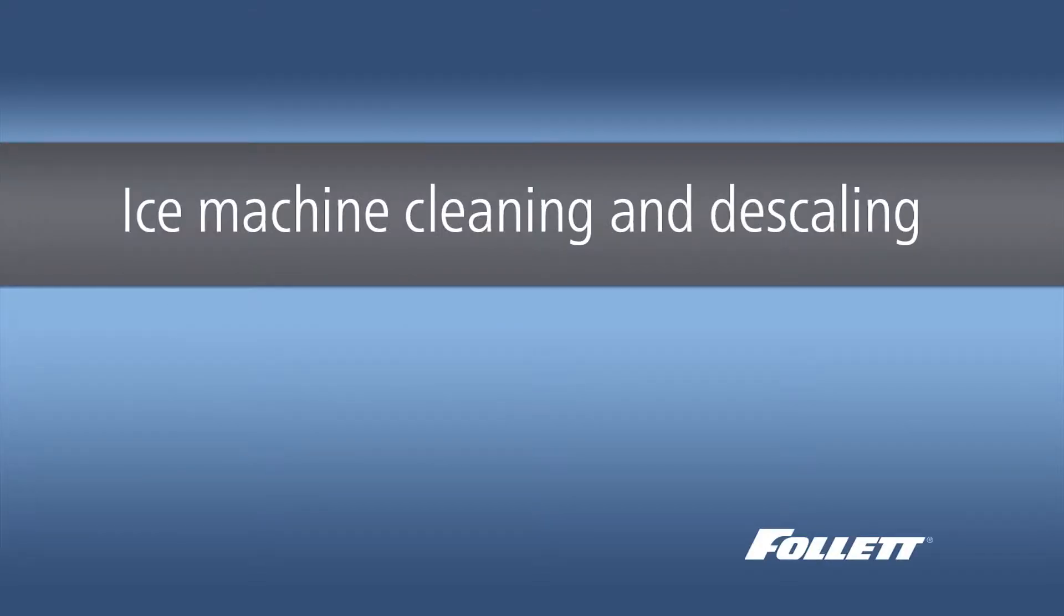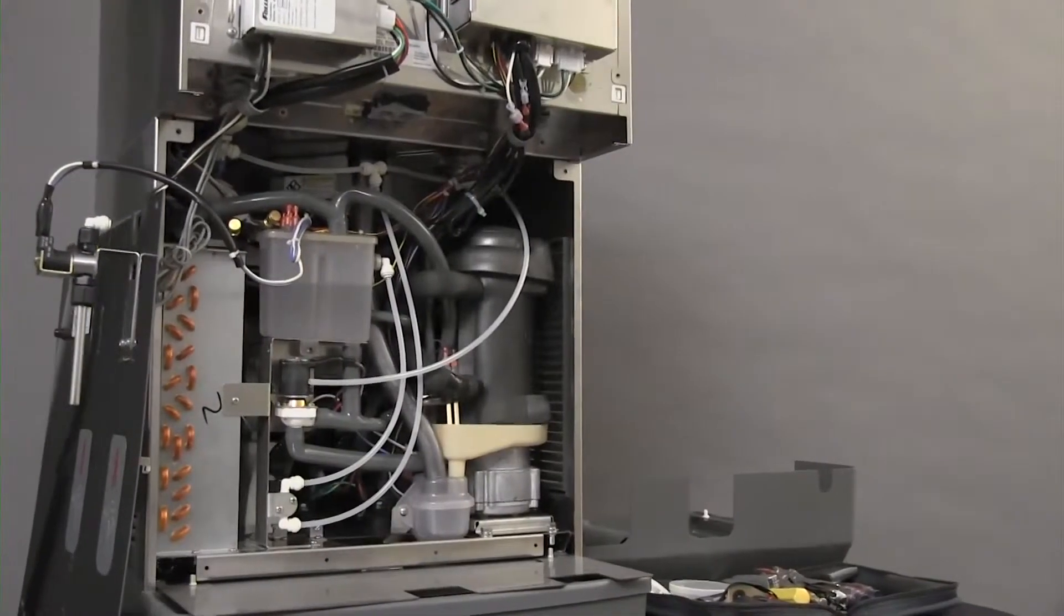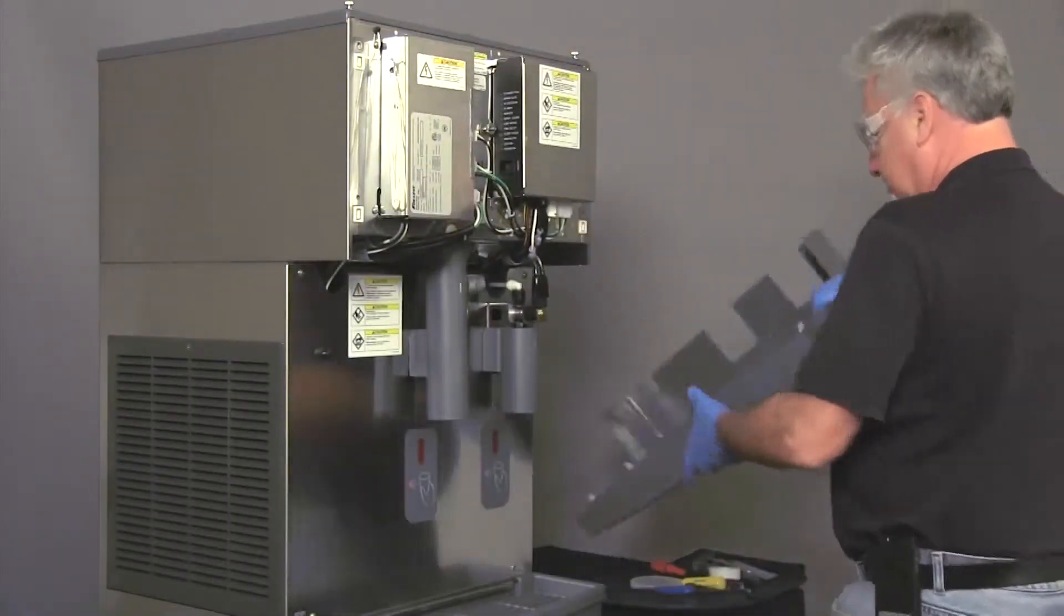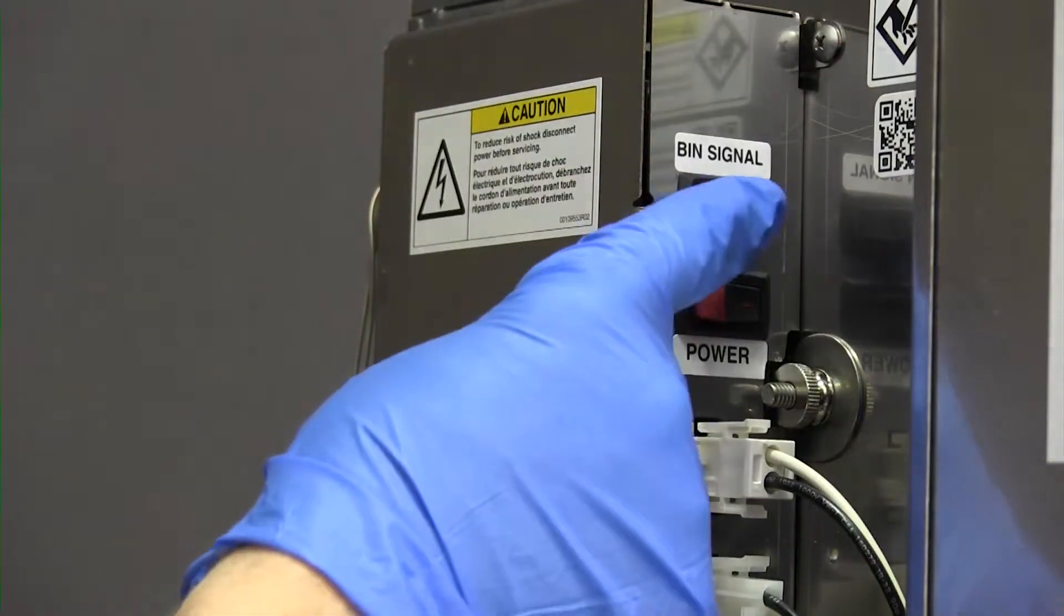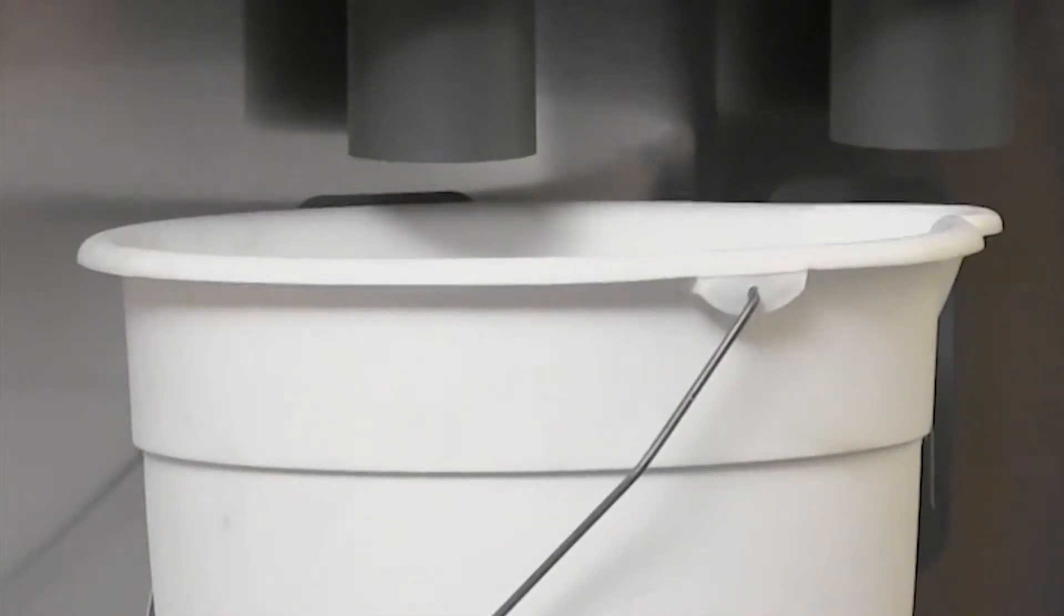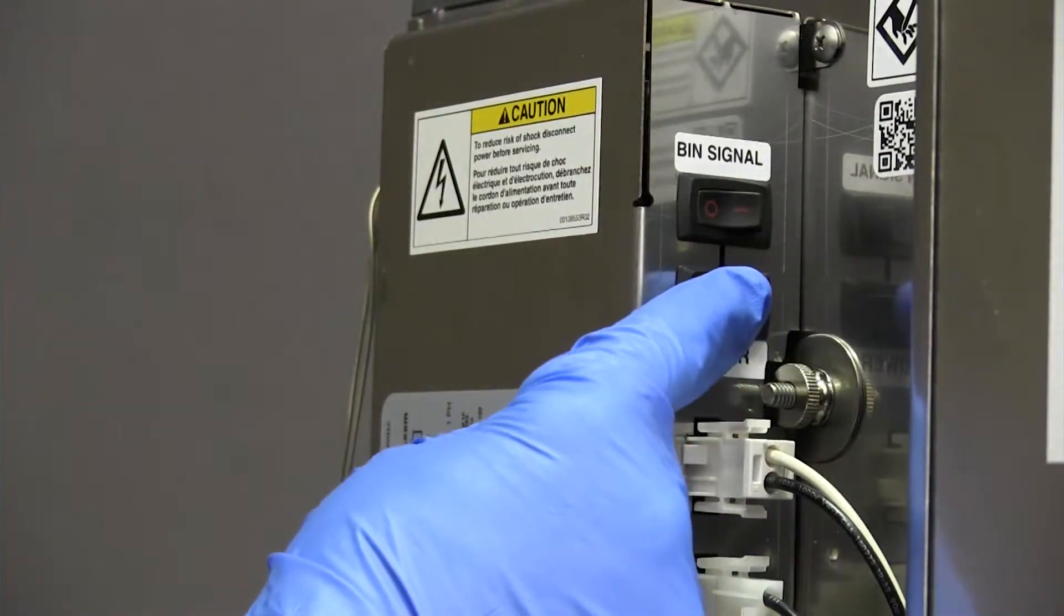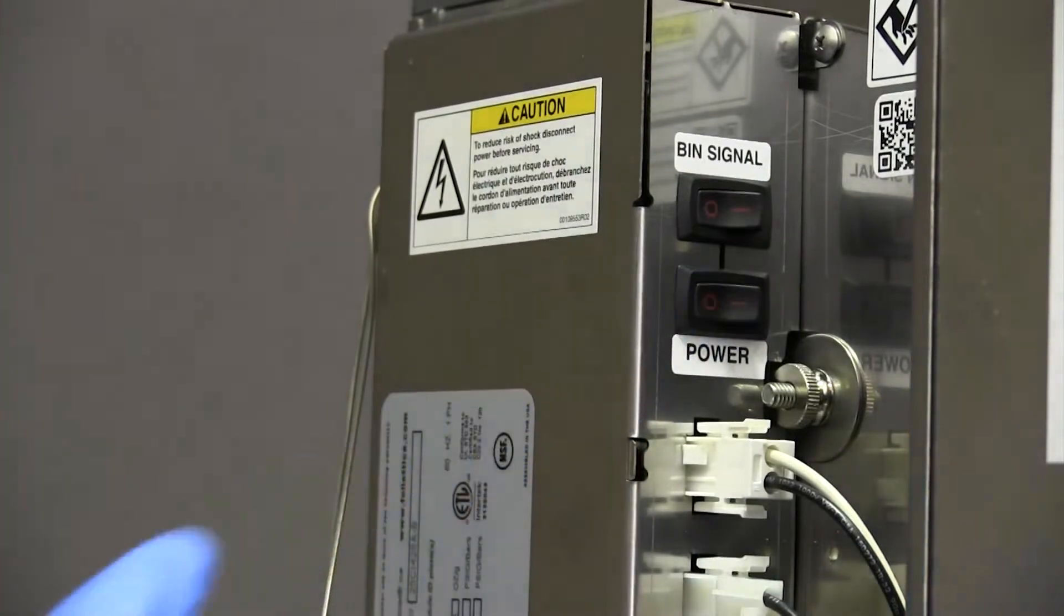The ice machine is located behind the splash panel. Remove the front cover. Turn off the bin signal switch. All of the ice should be dispensed and discarded. Do not put any of this ice back into the ice storage bin after the procedure is complete. Turn off the dispenser power. Always turn off dispenser power before cleaning or removing parts from the ice storage hopper.